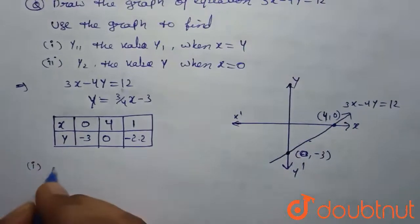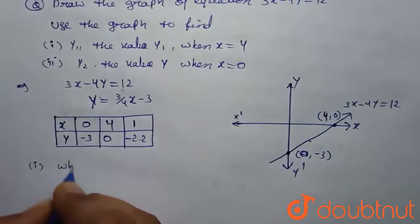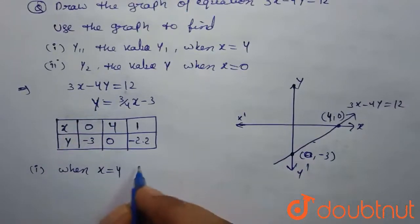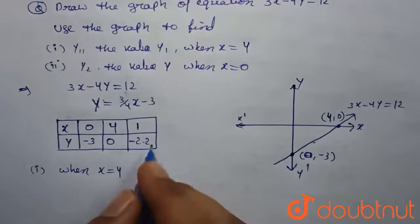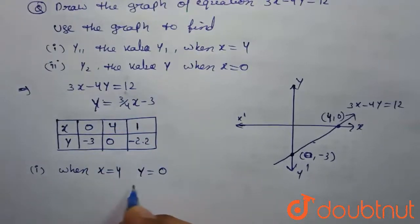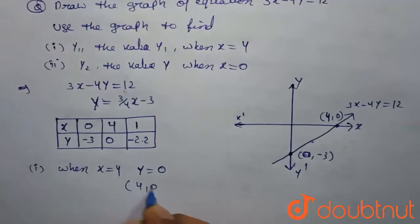Now, we are finding the first value when x is equal to 4. When x is equal to 4, by using the equation, y is equal to 4, 4 get cancelled. 3 minus 3 will be 0. Therefore, the value will be 4, 0.